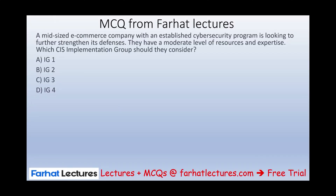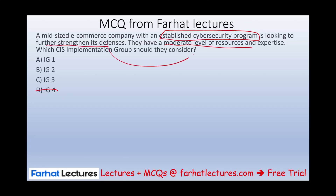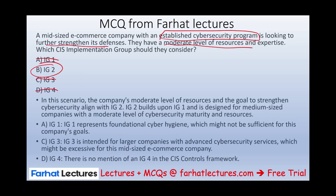Let's look at an MCQ from Farhat Lectures. There is no IG4, so we can eliminate that option immediately. 'A mid-sized e-commerce company with an established cybersecurity program is looking to further strengthen its defenses. They have a moderate level of resources and expertise. Which CIS implementation group should they consider?' They already have an established program, so IG1 is covered. There's no indication of critical or highly sensitive data, so IG3 is out. With moderate resources and a desire to strengthen defenses, the answer is IG2.